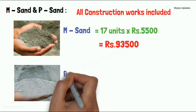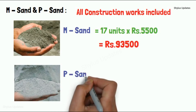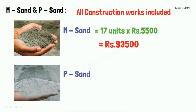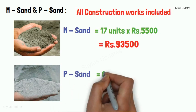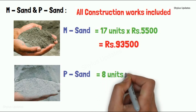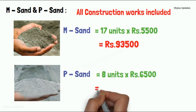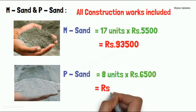P-Sand: For an 850 square feet house, 8 units of P-Sand is required. The current market rate of P-Sand is Rs. 6,500. So when you multiply 8 units into Rs. 6,500, you get Rs. 52,000.